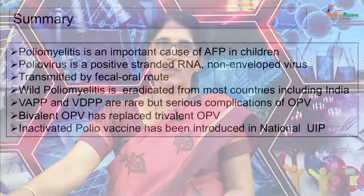To summarize: poliomyelitis is an important cause of acute flaccid paralysis in children. Poliovirus is a positive-sense single-stranded RNA virus which is non-enveloped, transmitted by the fecal-oral route. While poliomyelitis is eradicated from most countries including India, most countries still continue to have vaccine associated paralytic poliomyelitis as well as vaccine derived paralytic poliomyelitis — serious though rare complications associated with oral polio vaccine.